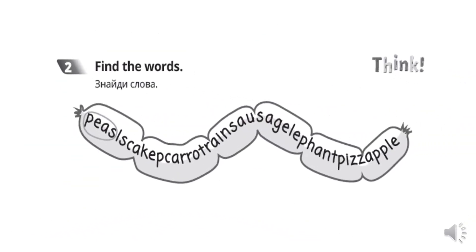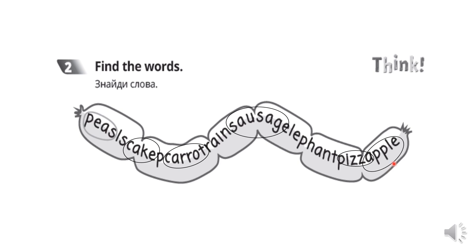Now let's do activity number two. Давайте виконаємо вправу два. Find the words. Знайди слова. Ми будемо шукати лише слова, які означають продукти, їжу. Peas – горох. Cake – торт, тістечко. Carrot – морква. Sausage – сосиска. Pizza. Apple – яблуко. Great job! Чудово, молодці!